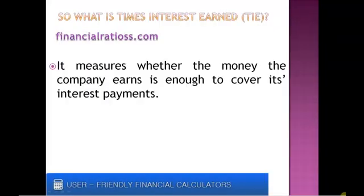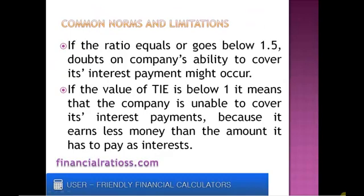So what is the Times Interest Earned Ratio? The Times Interest Earned shows the financial safety level available to creditors. It measures whether the money the company earns is enough to cover its interest payments. If the ratio equals or goes below 1.5, some doubts on a company's ability to cover its interest payment might occur.